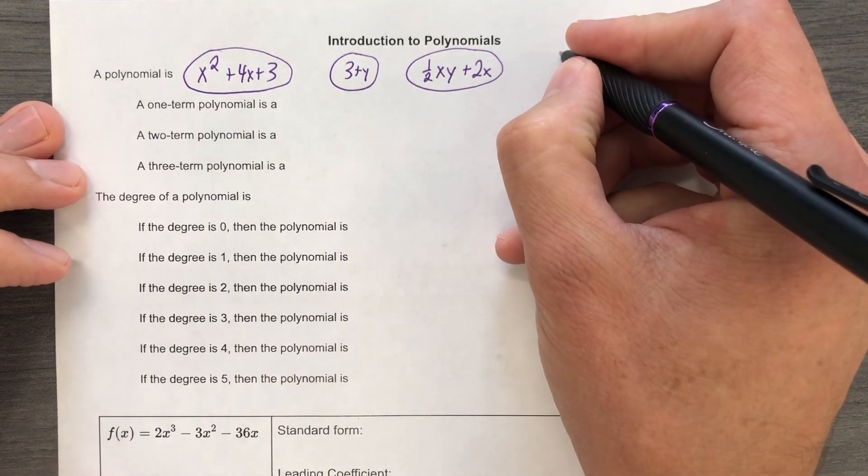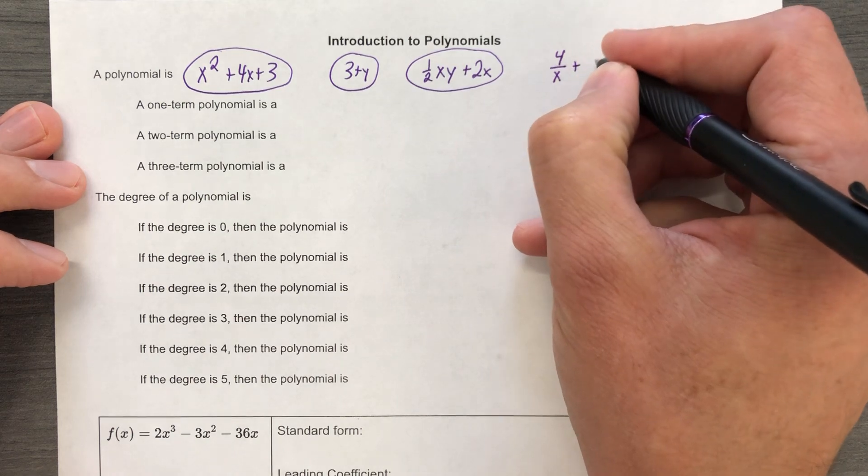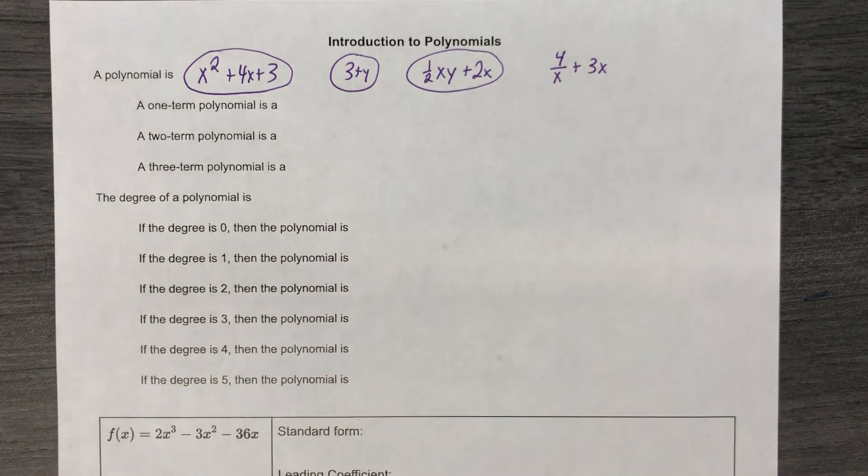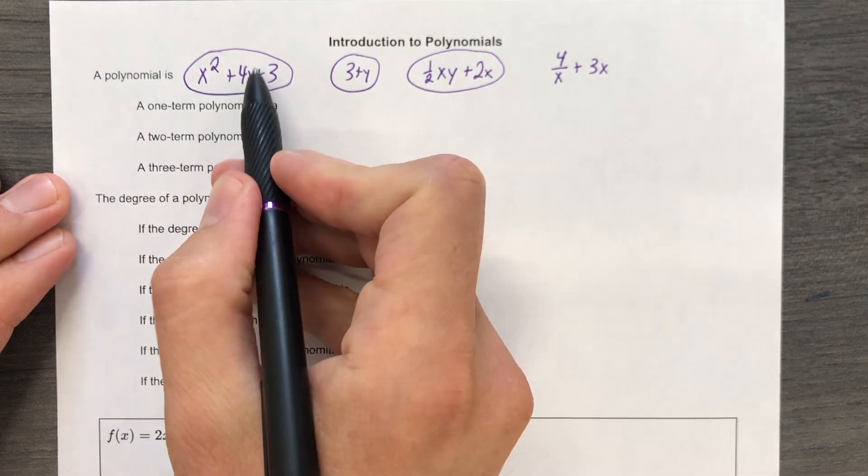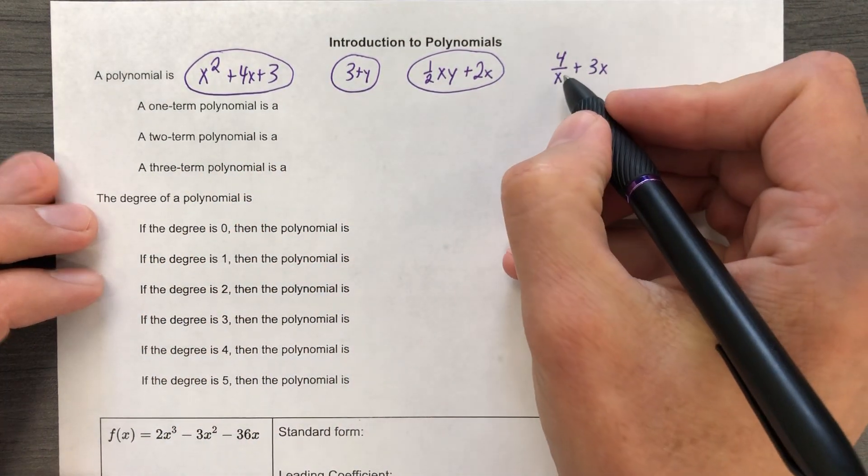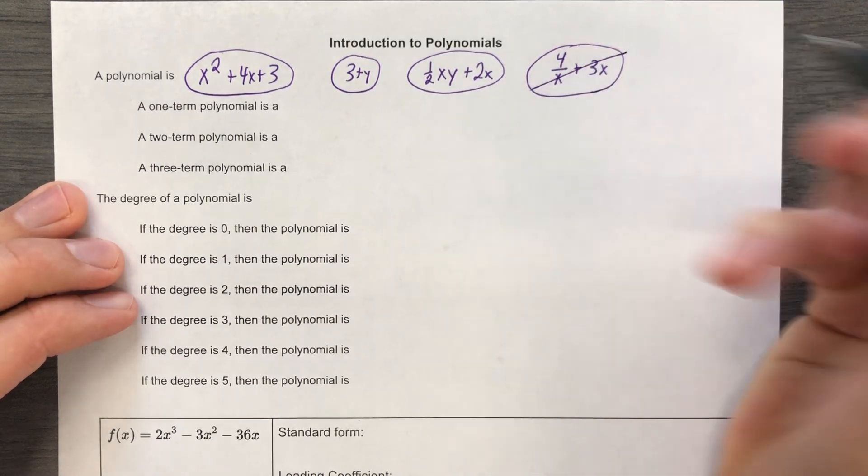If I handed you, for example, 4 over x plus 3x, that is not a polynomial. And so I could write the definition of it for you if you really wanted me to. But it really comes down to this. We have to have integer exponents, positive integer exponents. And that's not going to happen here, because technically this is 4x to the negative 1. So this is not a polynomial.